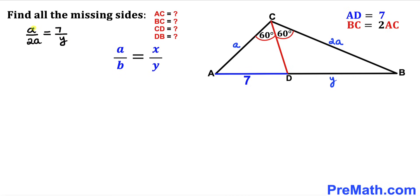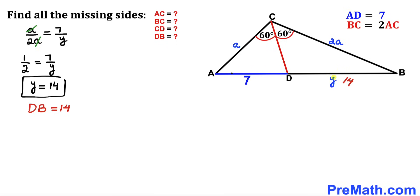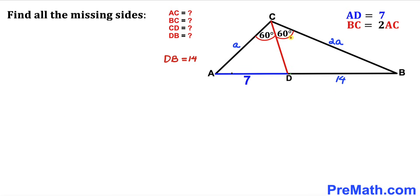Filling in the formula, we get a divided by 2a equals 7 divided by y. The a's cancel, leaving 1 divided by 2 equals 7 divided by y. Cross-multiplying gives y equals 2 times 7, which is 14. So our DB length turns out to be 14 units.